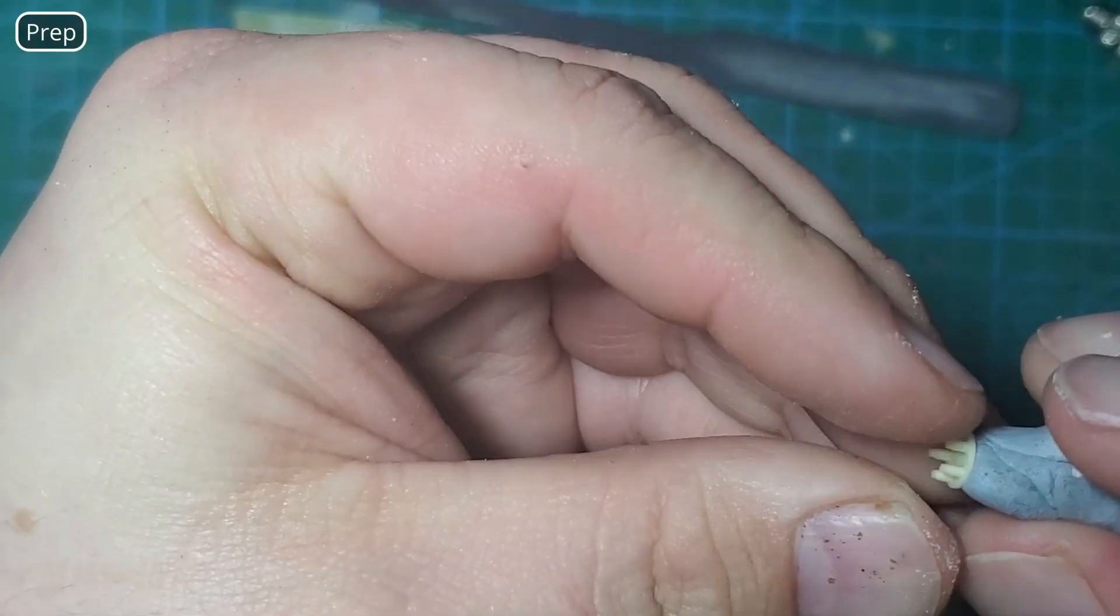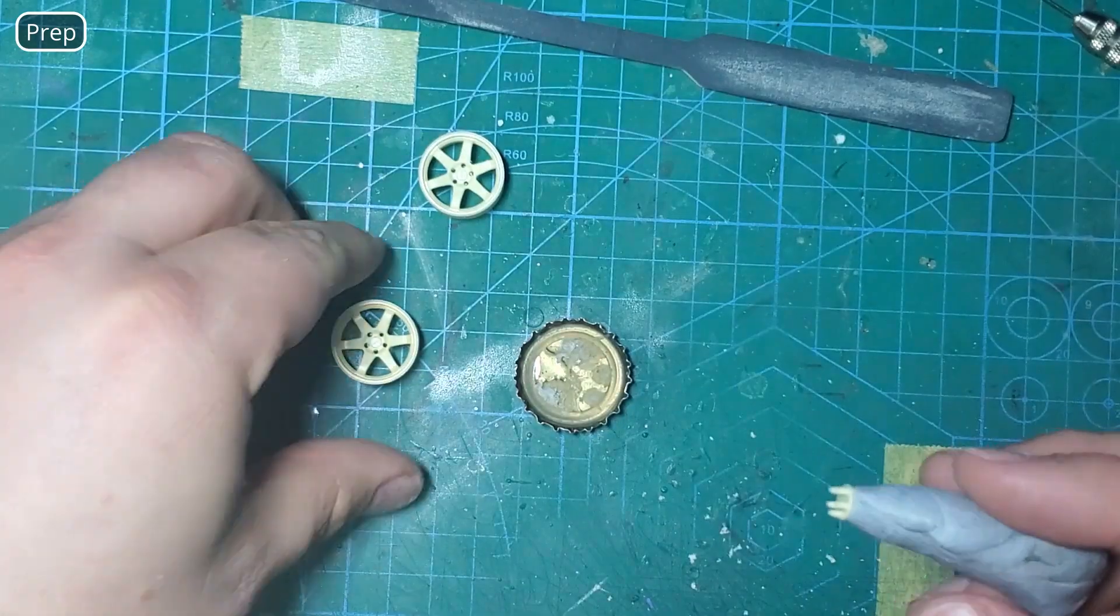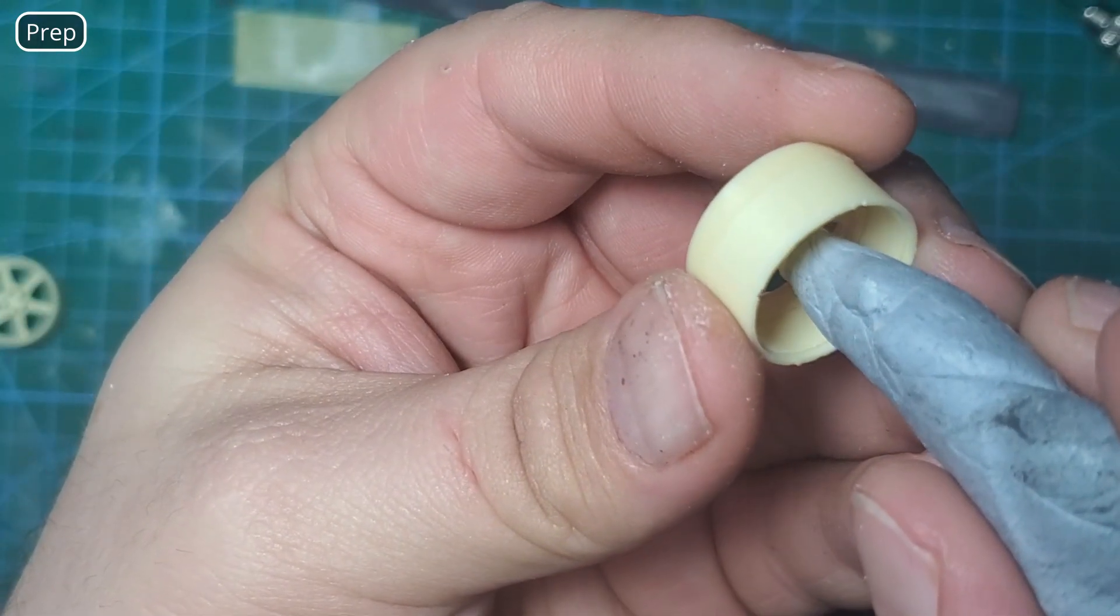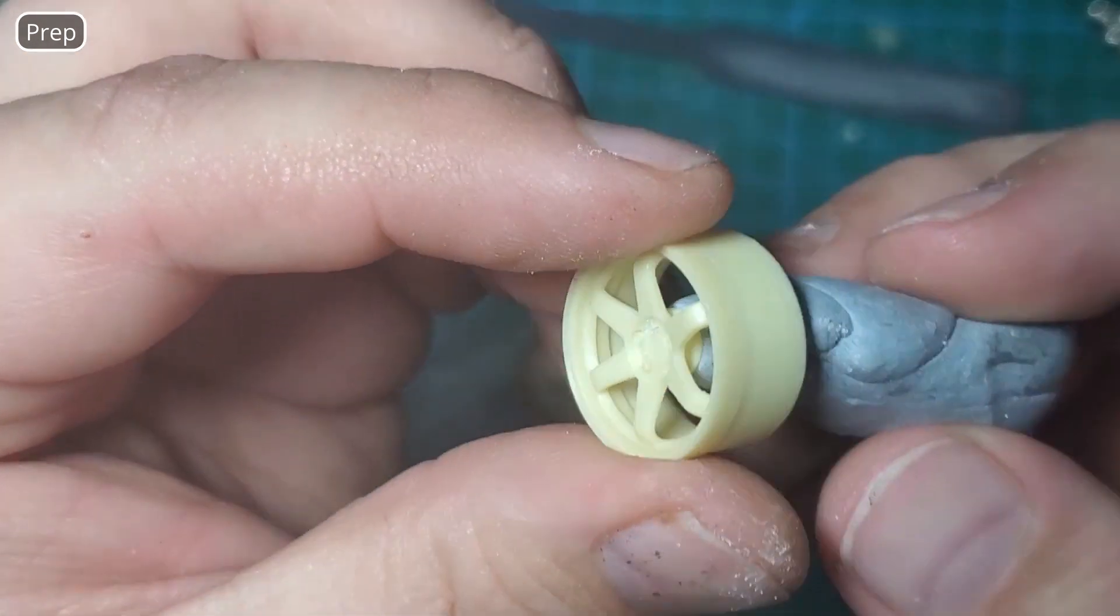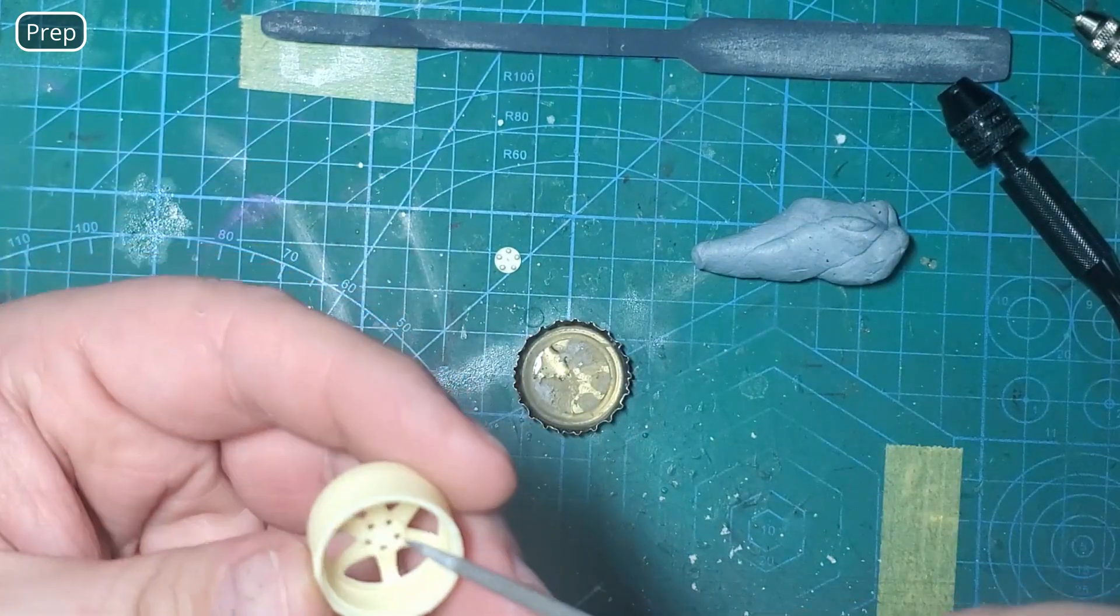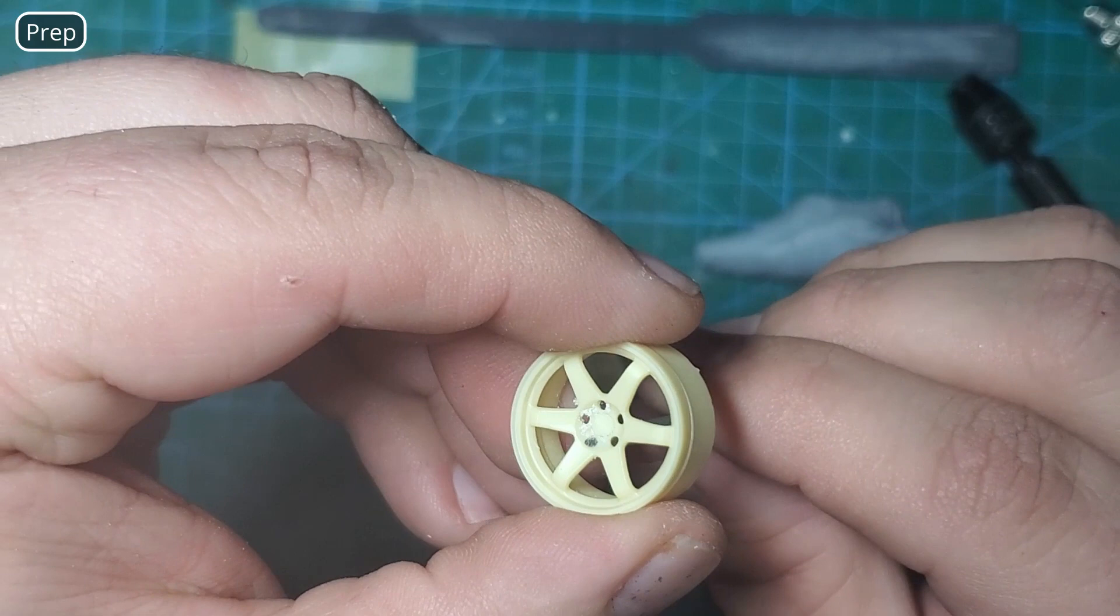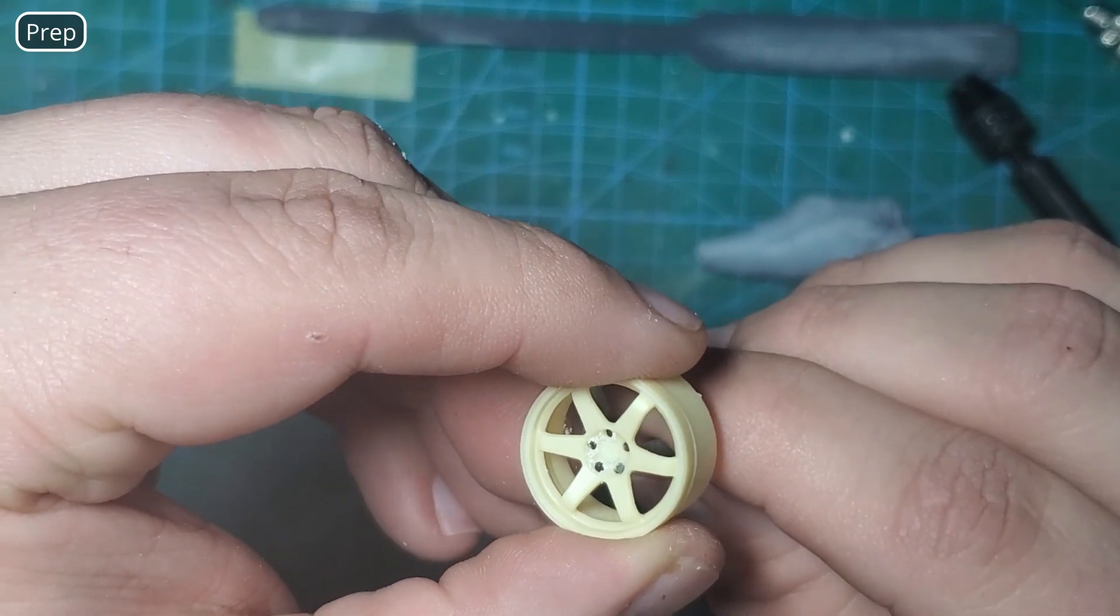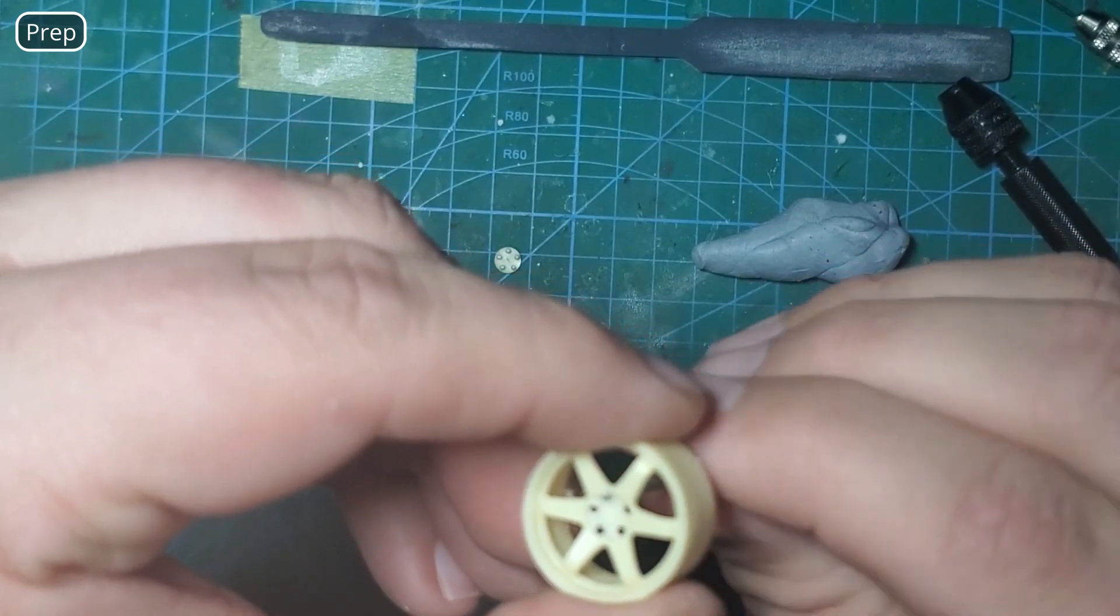I'm going to stick the lug nuts onto some blue tack to make them easier to hold and I want to test the clearance and make sure I don't have any resistance. Once you add primer and paint these can tighten up a little bit. If you're having resistance now you will have problems after they're painted. To open these lug nut holes up a little bit I'm going to use my round metal file and using very little pressure just twist and widen them a little bit at a time until I have no resistance when I test fit the lug nuts.